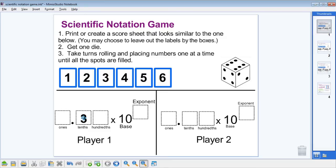Next, player two rolls and rolls a two. That player decides to put it in the hundredths place. They continue taking turns and placing numbers until all the boxes have been filled.